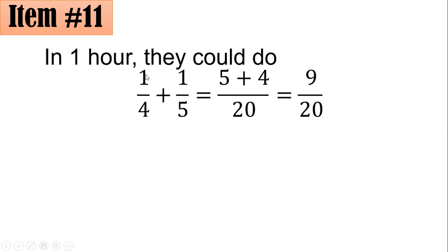One-fourth. How come I added this? So the first guy can do it in four hours, meaning to say, if the whole work done is one, he could do one-fourth of it in an hour. And for the second guy, since he could do it in five hours, in one hour he could do one-fifth of the work. And since they will be working together, we have to add the rates.